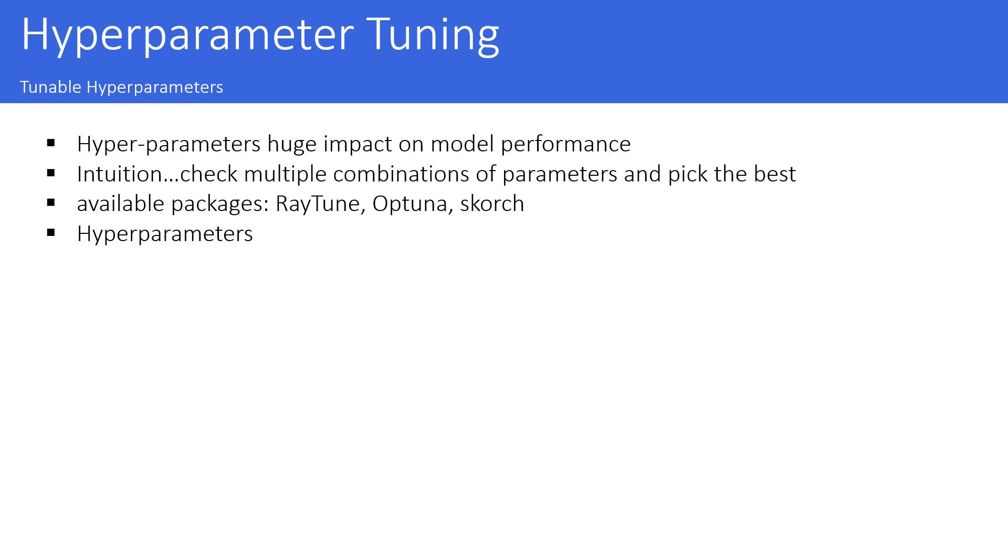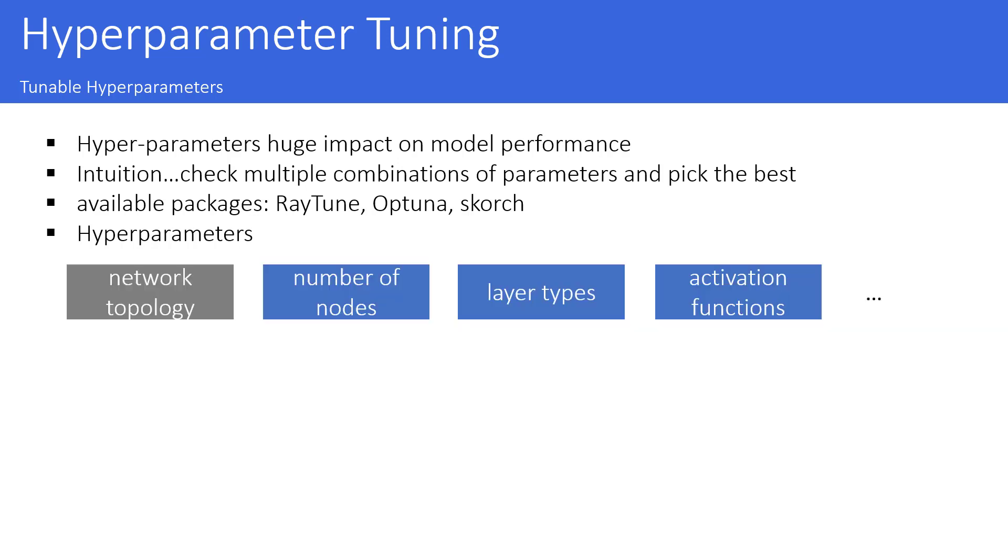And then there are a bunch of different hyperparameters. I tried to categorize them into different classes. The first class would be the network topology. If you want to change the topology of your network, you could change the number of nodes. You could change the layer types, the activation functions, everything that is defined in your model class.